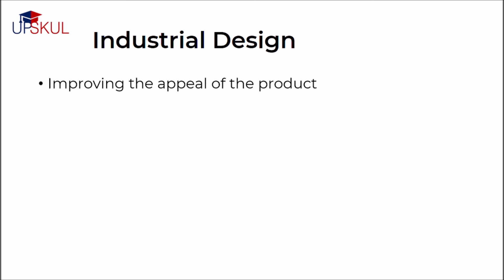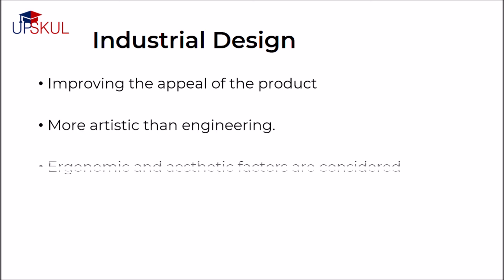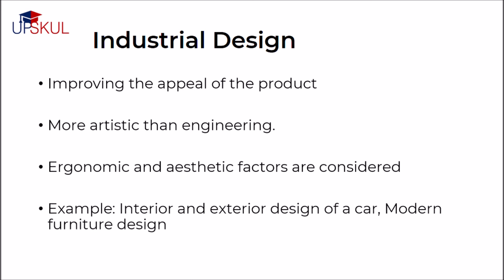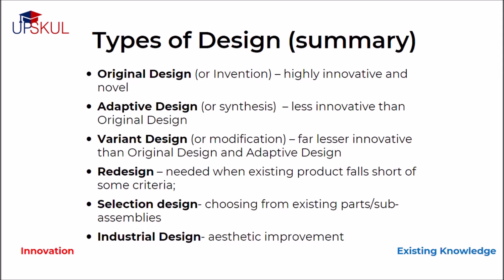Industrial design is a form of design that deals with improving the appeal of a product to human senses, especially its visual appeal. While this type of design is more artistic than engineering, it is a vital aspect of many kinds of design. Industrial design takes into consideration how the human user can best interface with the product, and is highly influenced by ergonomic and aesthetic factors.